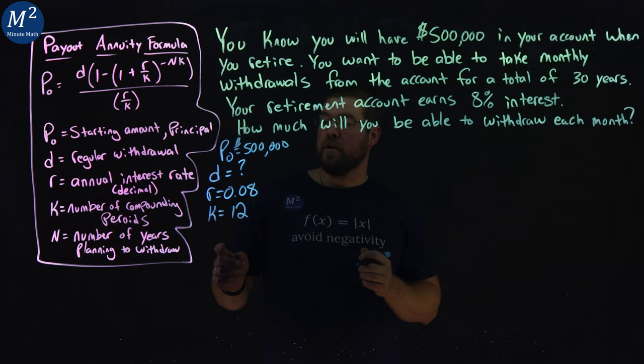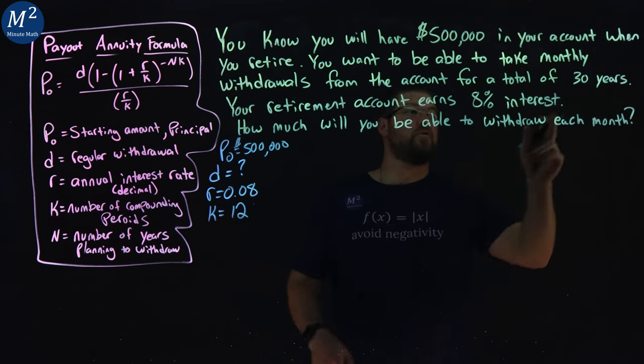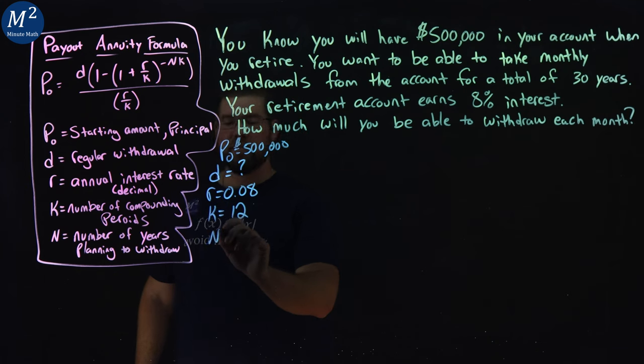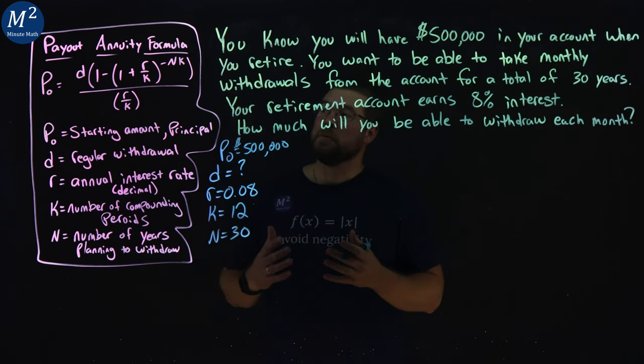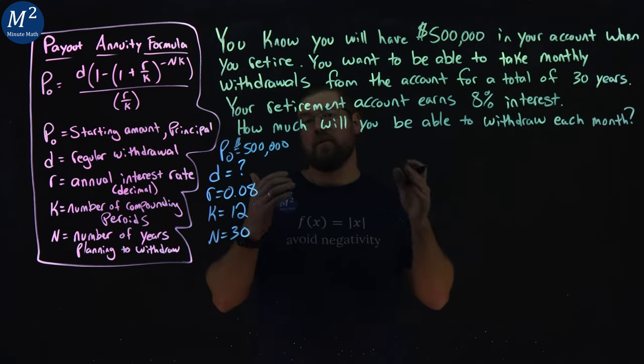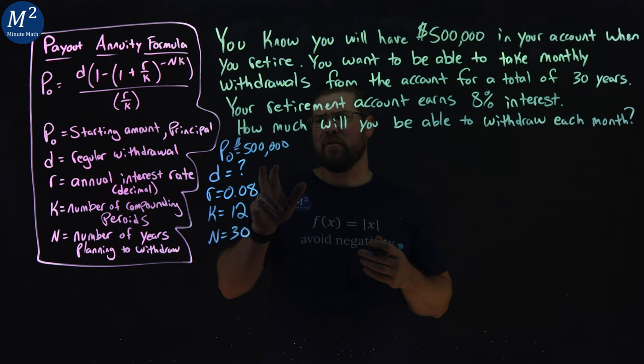And the number of years we're planning to withdraw. We're trying to withdraw for 30 years, so our N value is going to equal 30. So now what I'm going to do is take my annuity formula and plug in the values that we know, and then we're going to solve for D.